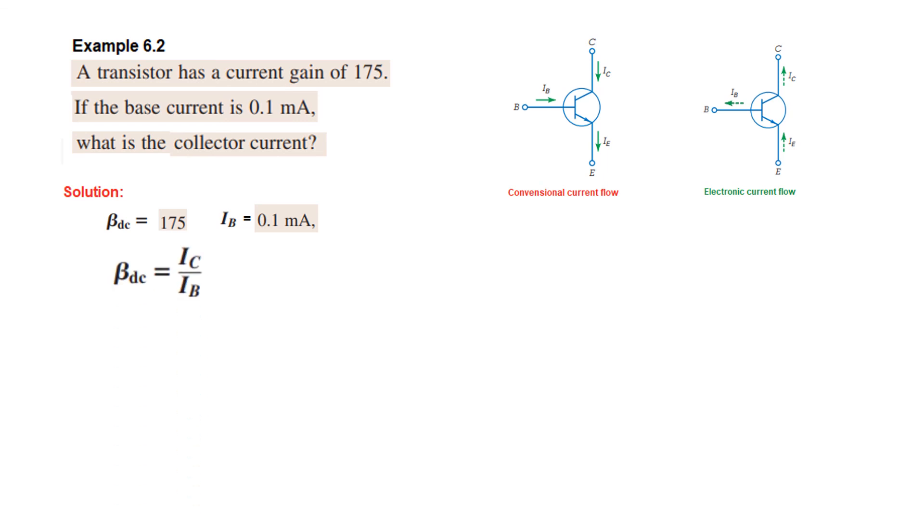So we know the relation between the beta DC, collector current and base current. So we need to find the collector current IC. So we can say that IC is beta DC multiplied by IB. And now plugging in the values, 175 times 0.1 milliampere. So we get 17.5 milliampere.